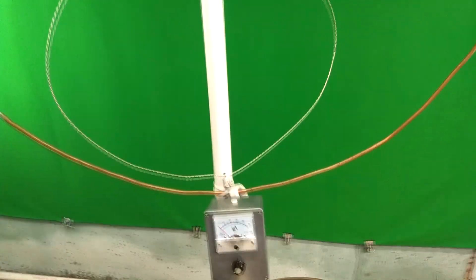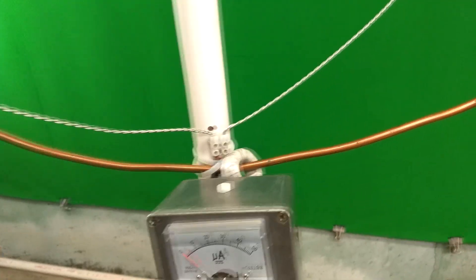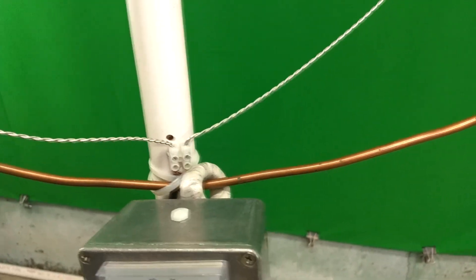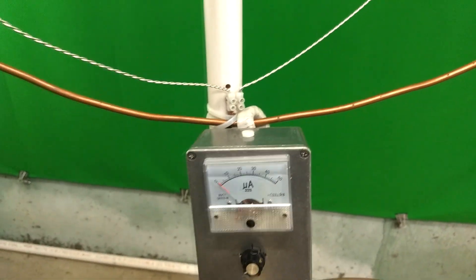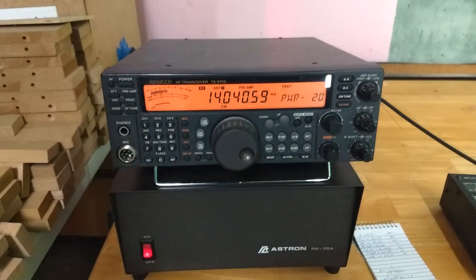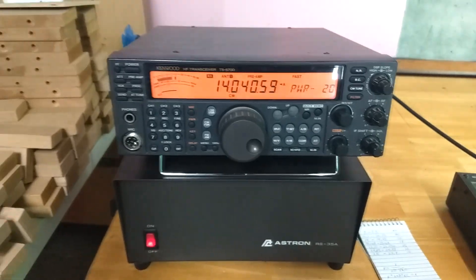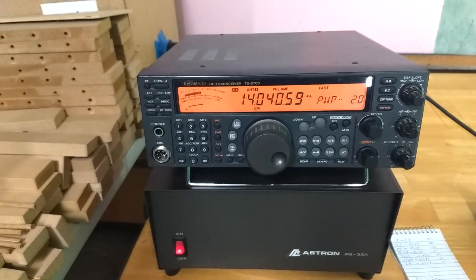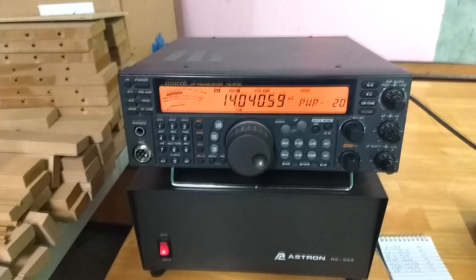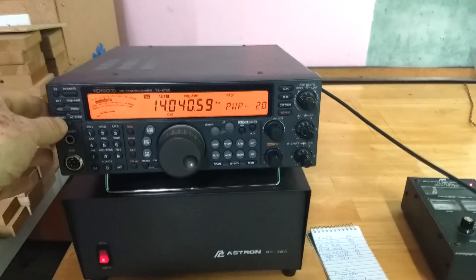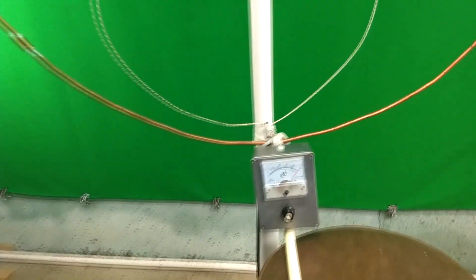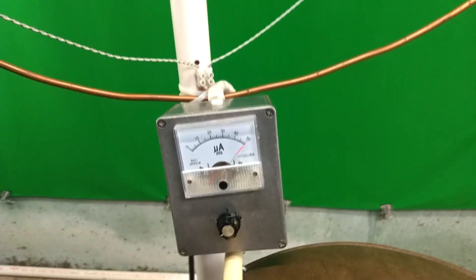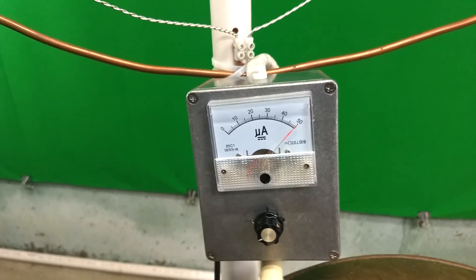And our current transformer has been fitted around the copper tubing, and there's our meter. And over here we have a transceiver, and I've set the output power to 20 watts. So I'm going to turn on a carrier, and previously I adjusted the meter for full scale.